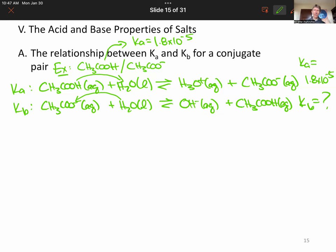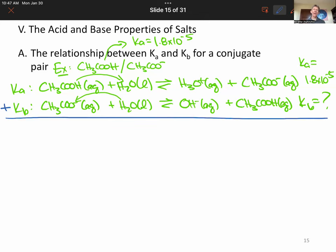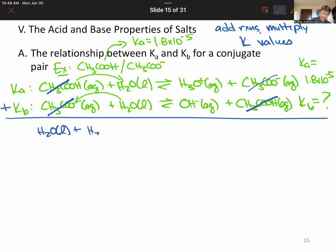Now, from our equilibrium chapter, we know that when you add reactions, you multiply K values. So add reactions, multiply K values. And when we add the reactions, you can see that we've got an acetate on one side and an acetate on the other. An acetic acid and an acetic acid. We can cross both of those out and write what's left, which is H2O plus H2O goes to hydronium plus hydroxide.